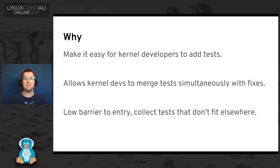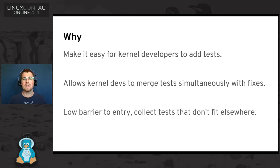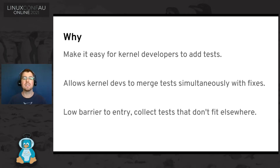It's easy for kernel developers to add tests, and that gives them one less excuse for not writing a test. Having tests in the kernel tree allows them to be merged simultaneously with kernel fixes, which is really helpful for backporting — you can backport the fix and the test one commit after the other. If tests are in an external repository, you have to sync up the backported kernel with the backport of the tests, which is much harder. So that's a big advantage.